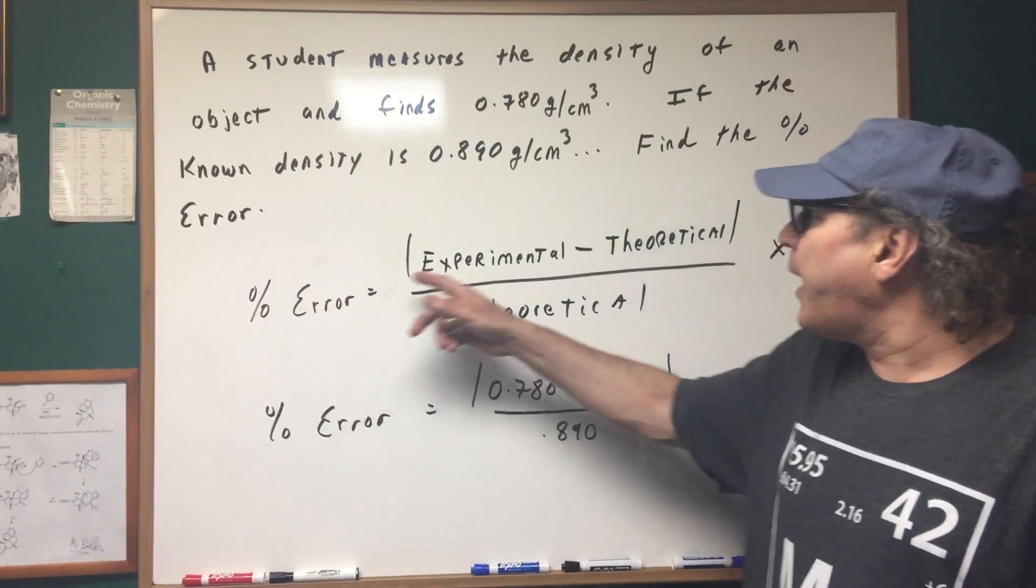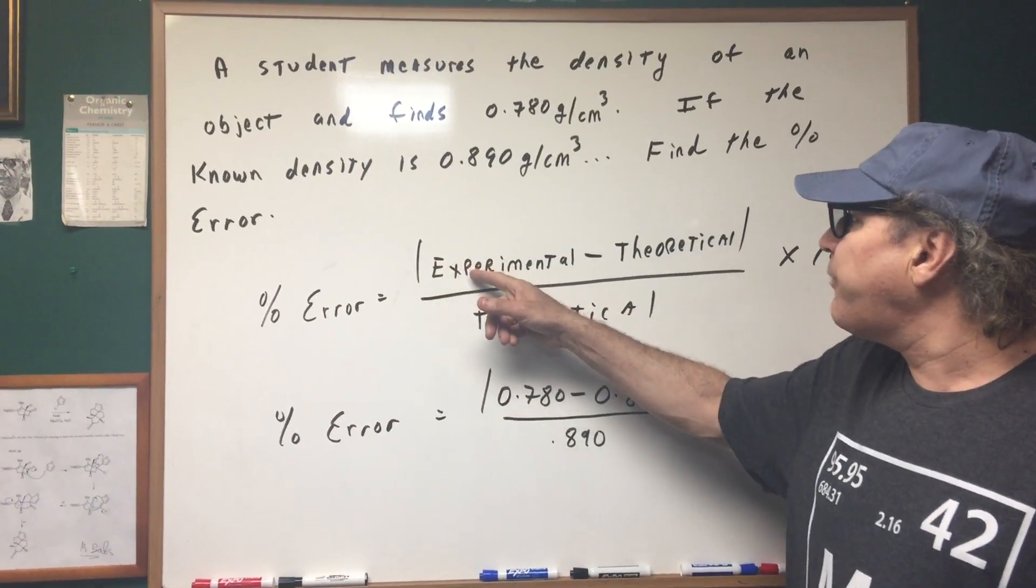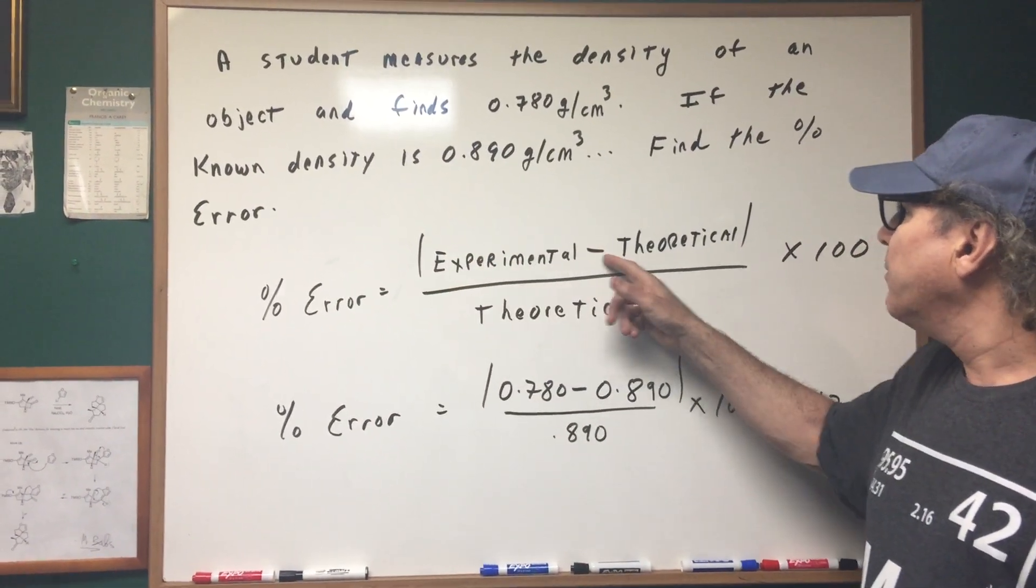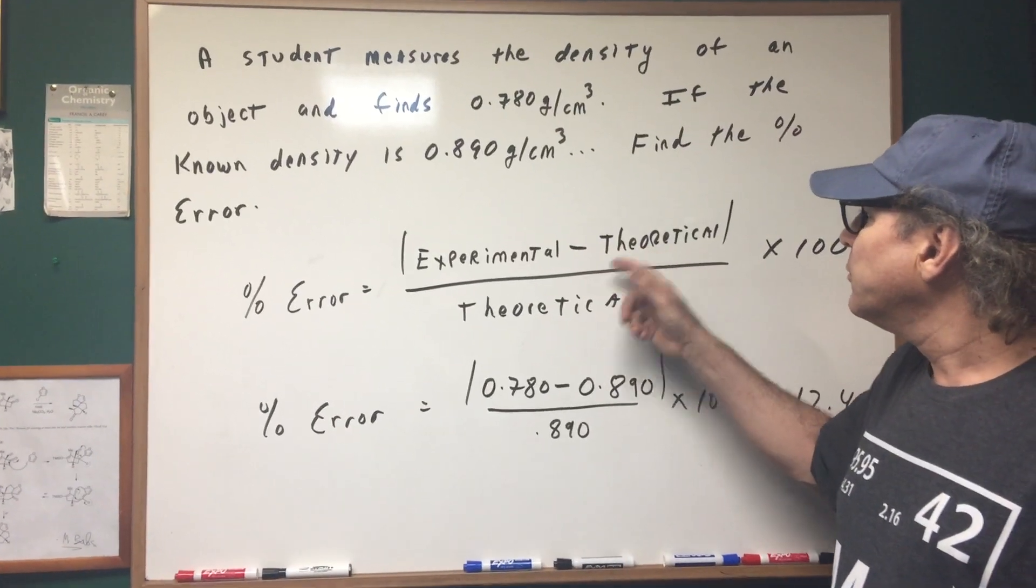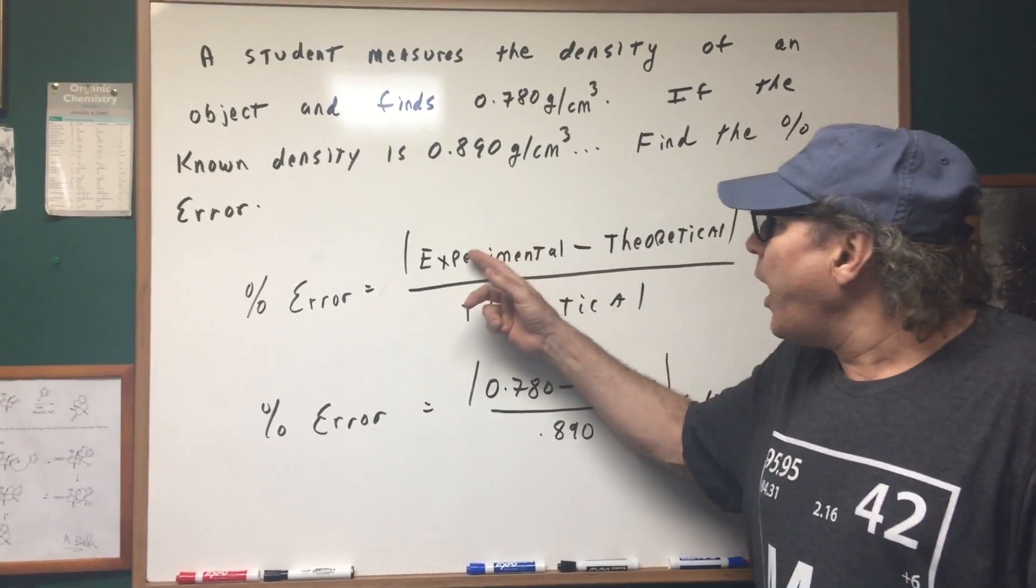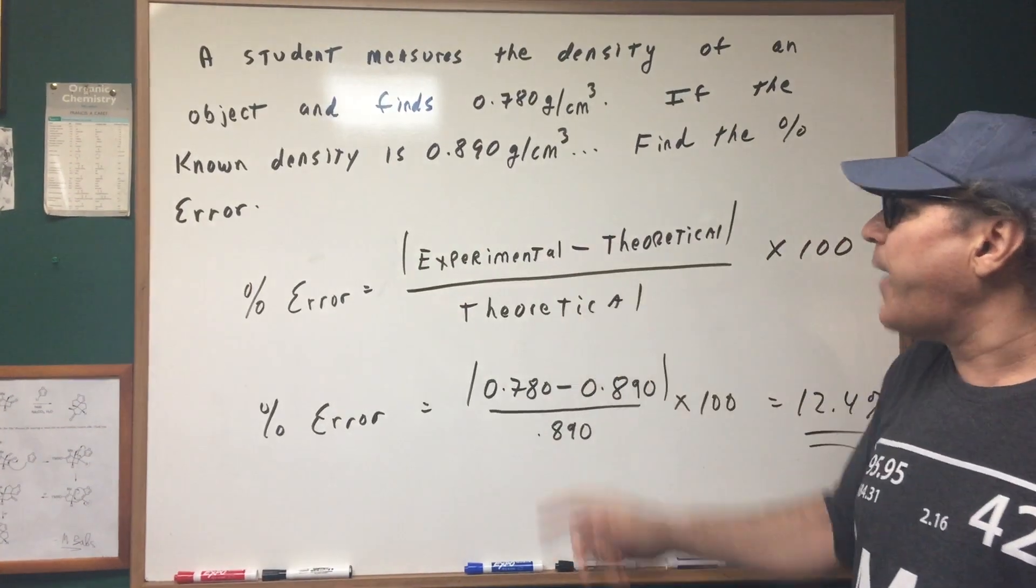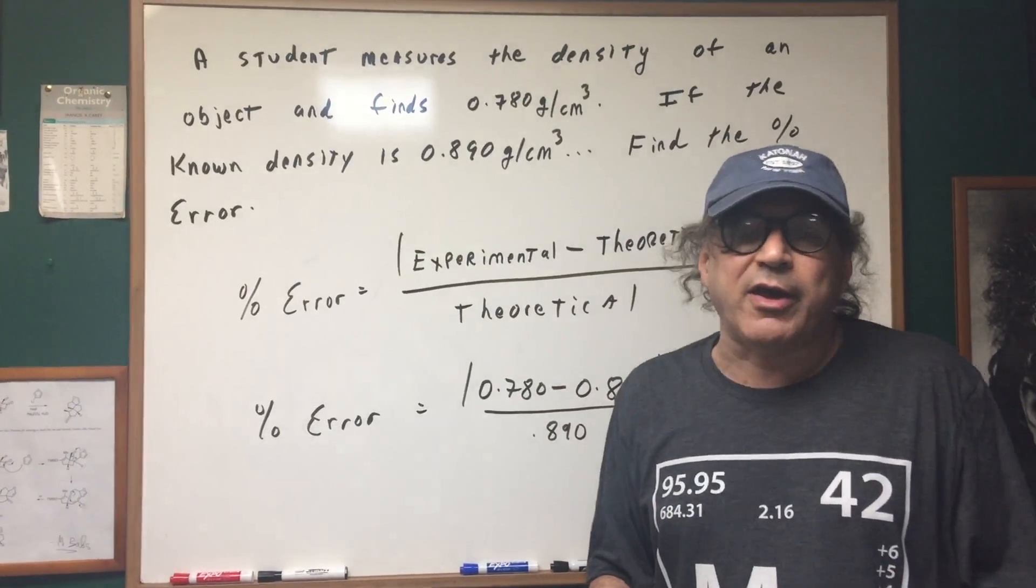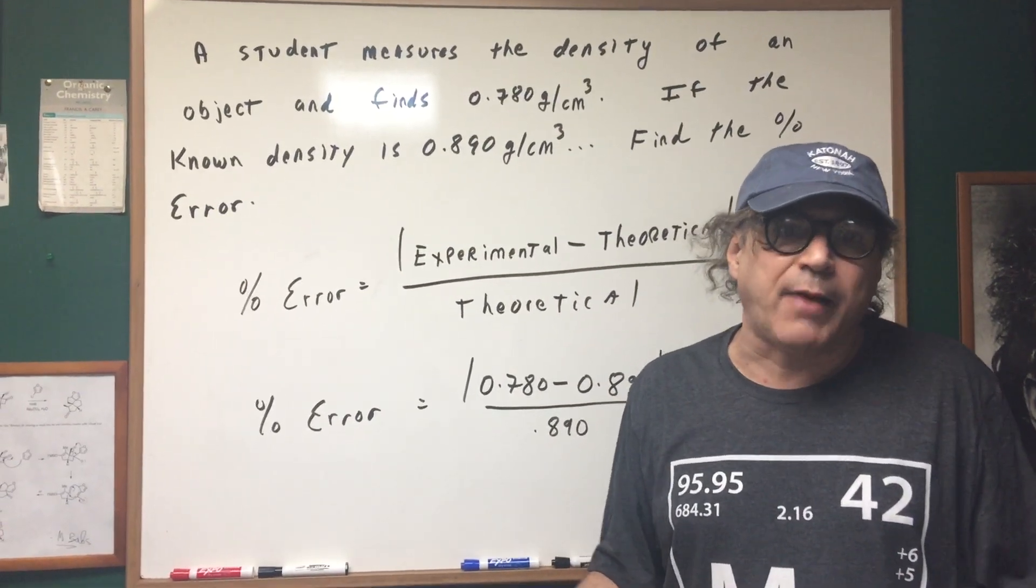What we did is the percent error is going to be the absolute value of the experimental minus the theoretical divided by the theoretical times 100. The reason why we do absolute value is sometimes you might be over the actual amount. Sometimes you might be under.